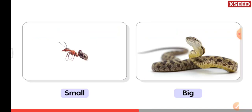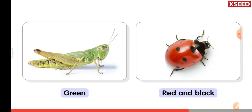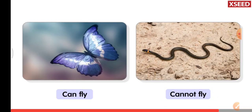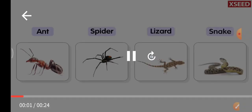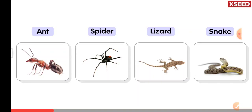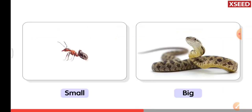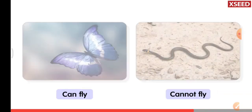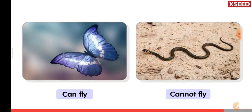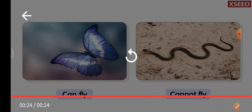Spider has eight legs, lizard has four legs, and snake has no legs. Ant is a small animal whereas snake is bigger. The colors also change. Creepy crawlies differ in the way they move and the legs they have — six, eight, four, and no legs. The colors and movement are also different from one another.